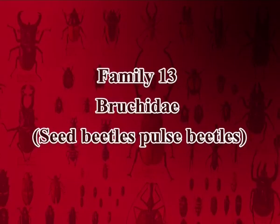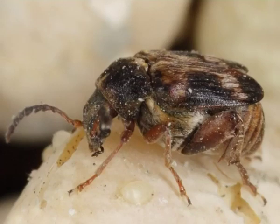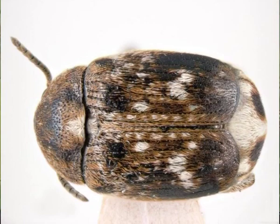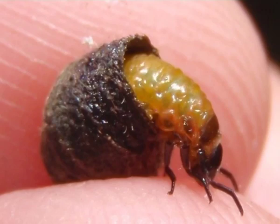The thirteenth family is Bruchidae, commonly called seed beetles or pulse beetles. The body is oval or egg-shaped, broadened posteriorly; head is concealed from above, prolonged into a short broad snout. Antennae are clubbed or serrate, sometimes pectinate. Elytra is short, exposing the tip of abdomen. They are black or brown, often mottled with patches of whitish or brownish pubescence. Larvae feed inside the seeds of legumes, and pupation occurs inside the seeds. Example: Callosobruchus chinensis.